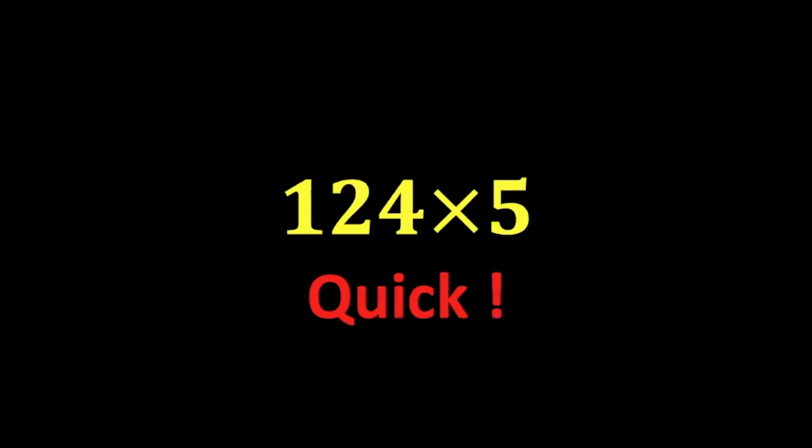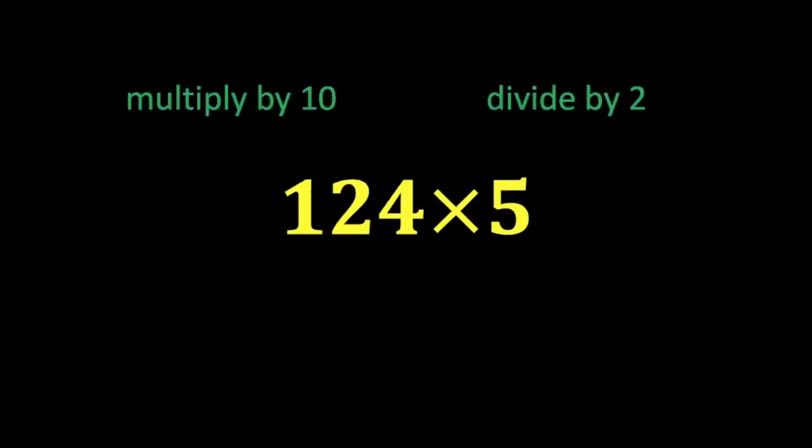So how do you multiply by 5 quick? You know what, let's make it worse. Let's multiply by 10 and divide by 2. But wait a second, more work? How is that easier?